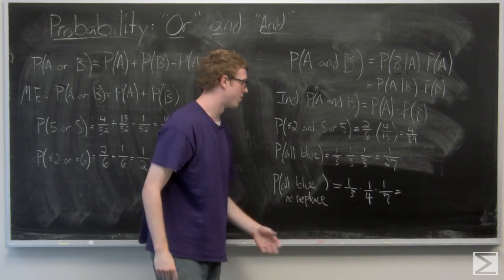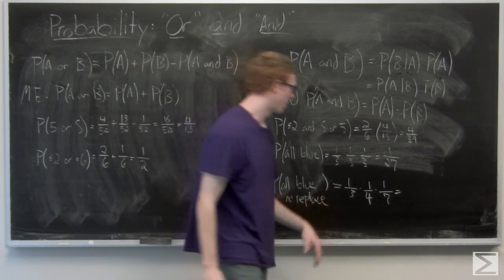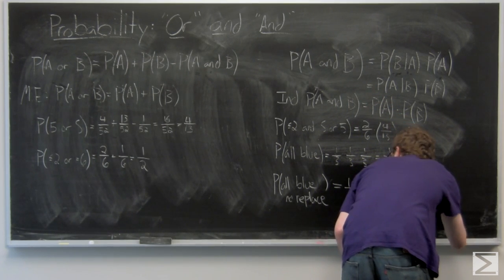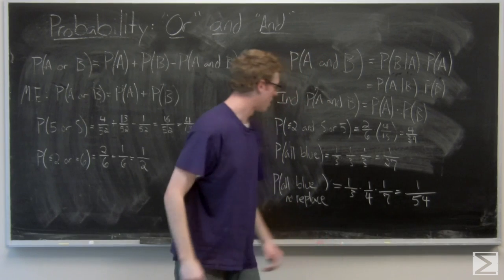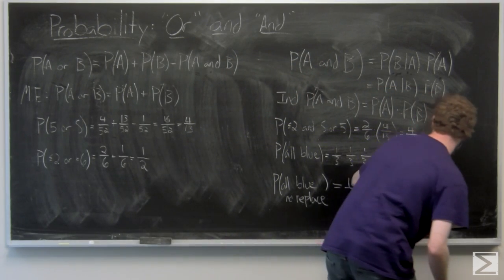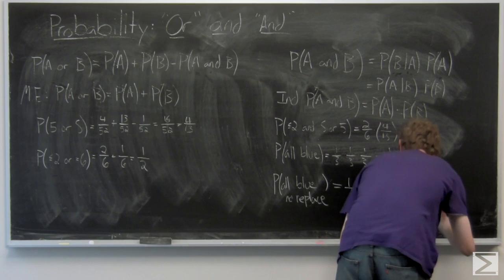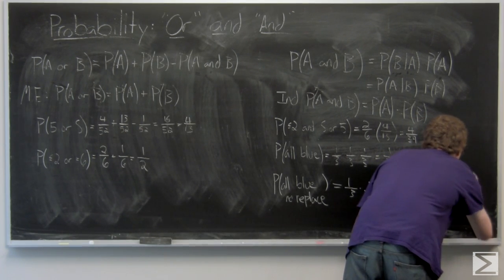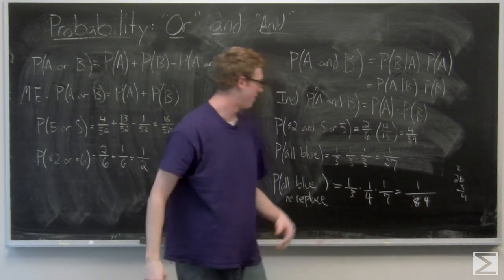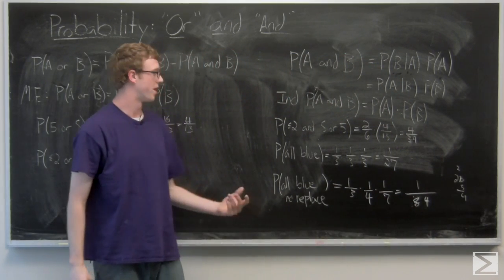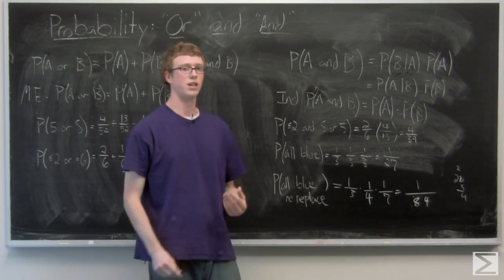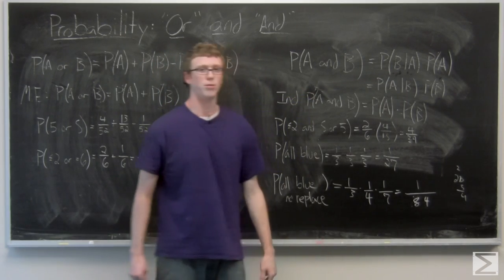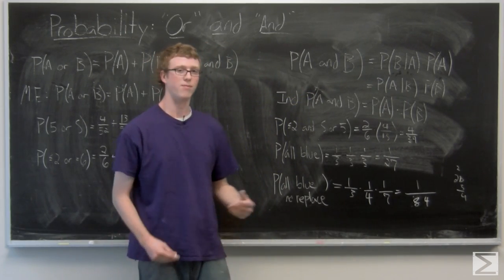Multiplying 1/3 times 1/4 times 1/7, we get a 1 out of 84 chance that all the marbles are blue without replacement. And that's how you calculate OR and AND probabilities. In the next video, we're going to look at how to calculate conditional probability — the probability of B given that A occurs.